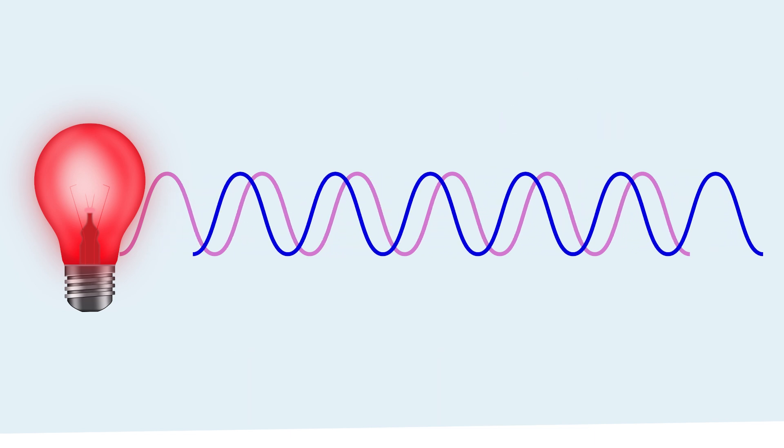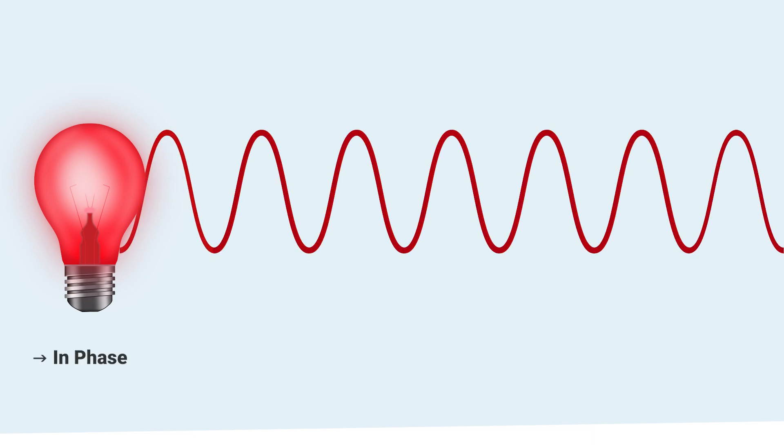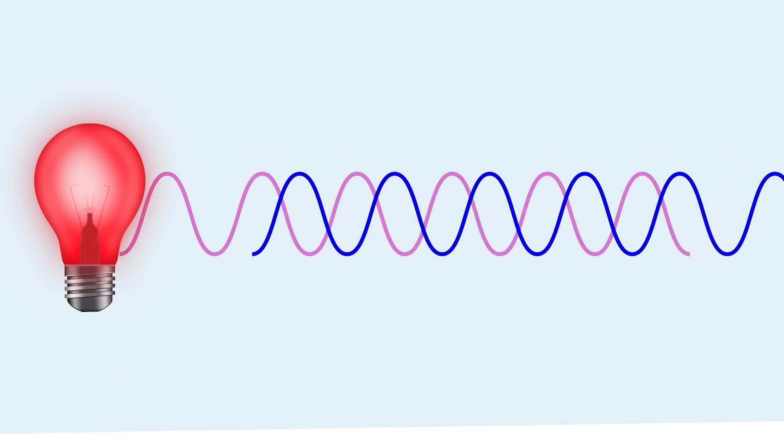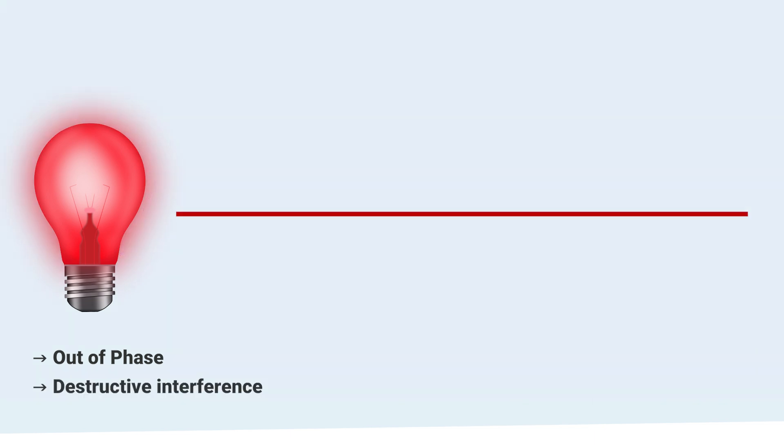If the peaks and troughs of the two interacting waves match up, the waves are said to be in phase and the resulting interference is called constructive interference. If the peaks of one wave match up with the troughs of the other waves, the waves are out of phase and the result is destructive interference instead.